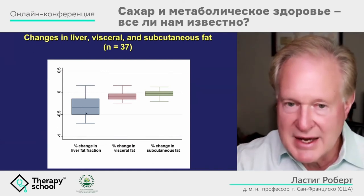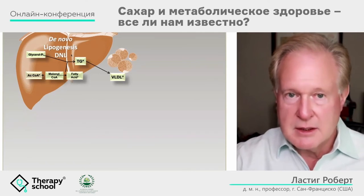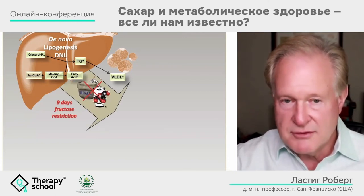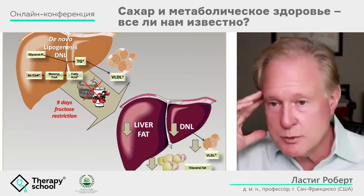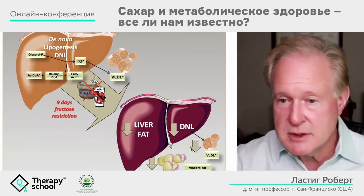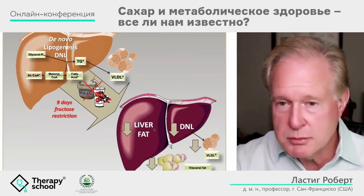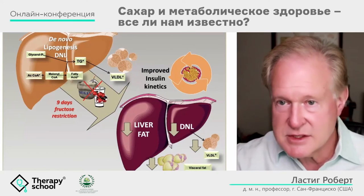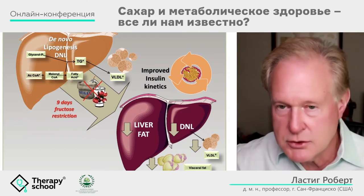In cartoon form: at baseline, fatty liver with lots of triglyceride and VLDL. After nine days of fructose restriction, isocaloric: liver fat down 22%, de novo lipogenesis down 46%, VLDL down 49%, visceral fat down 7%. Most importantly, their pancreases started making insulin properly — we reversed their metabolic syndrome just by removing sugar from their diet, with no change in calories and no change in weight.